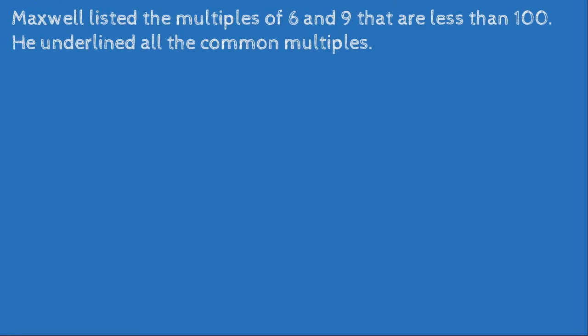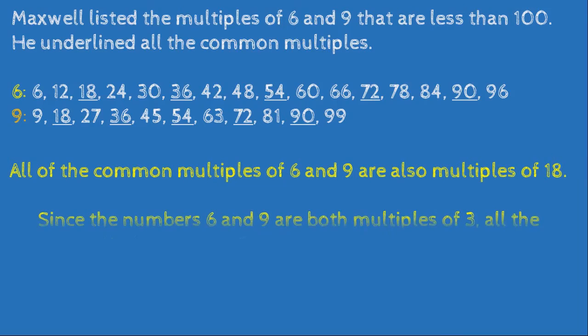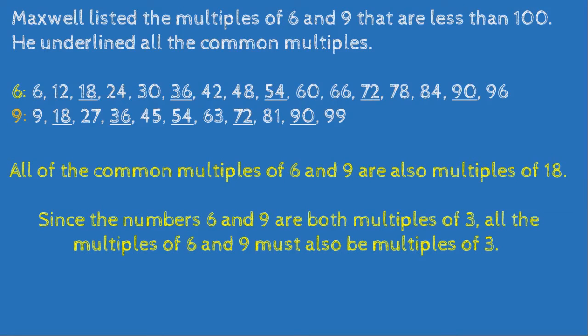Next word problem: Maxwell listed the multiples of 6 and 9 that are less than 100 and underlined all the common multiples. Multiples of 6 up to 96: 6, 12, 18, 24, 30, 36, 42, 48, 54, 60, 66, 72, 78, 84, 90, 96. The common multiples of 6 and 9 — 18, 36, 54, 72, 90 — are all also multiples of 18. Since 6 and 9 are both multiples of 3, all common multiples of 6 and 9 must also be multiples of 3.